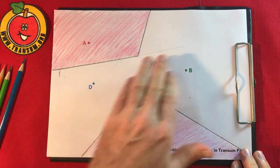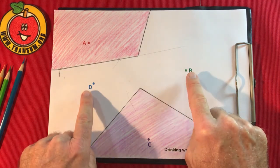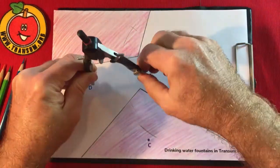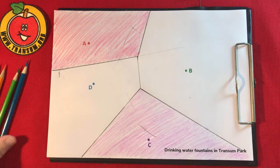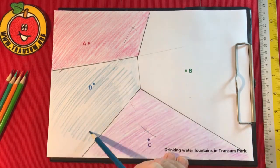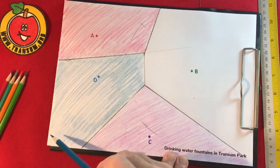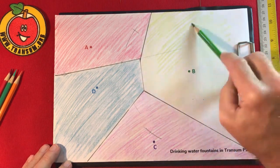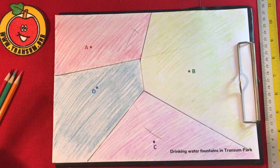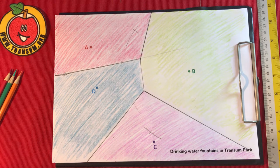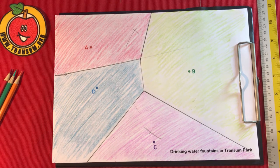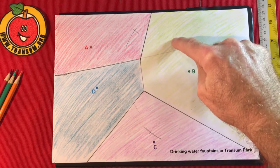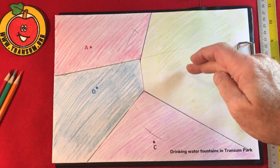I now need to split up the remaining region between D and B, so I'll draw the perpendicular bisector of DB. And there we have it, a Voronoi diagram. It's called a Voronoi diagram and it shows wherever you happen to be within the park, whichever cell you're in shown by the different colors, you can then work out which is the nearest drinking water fountain to you.